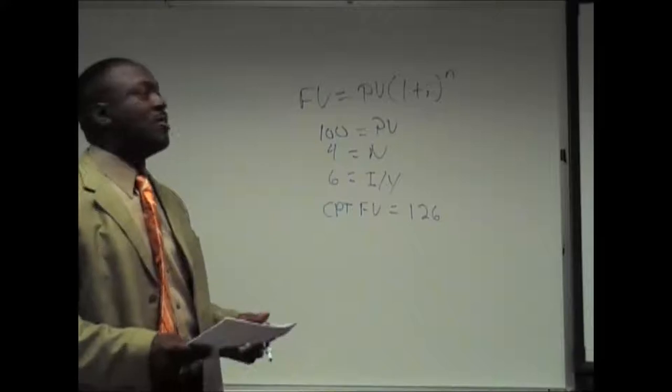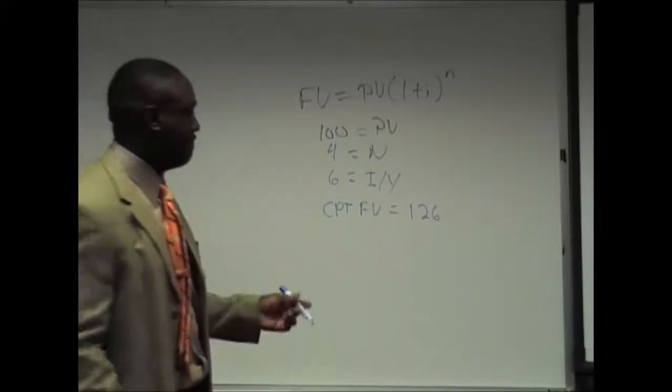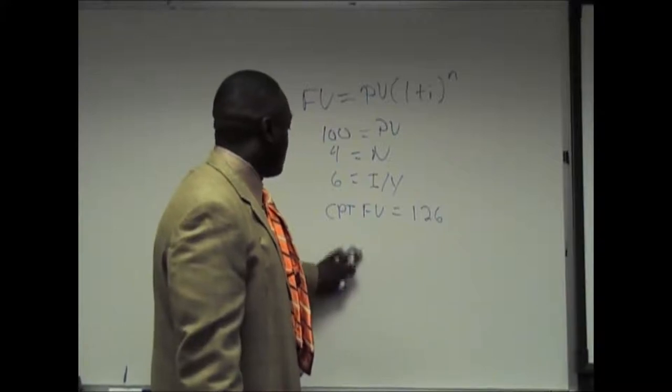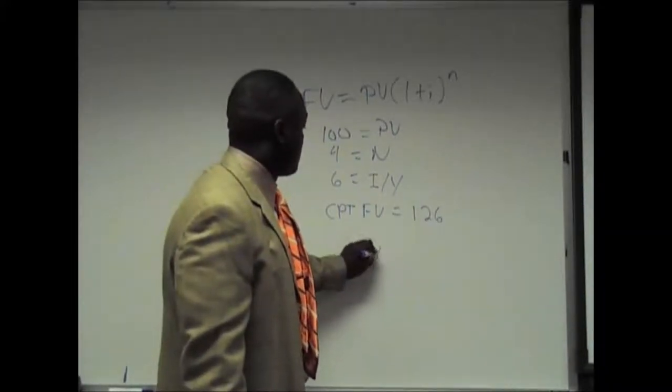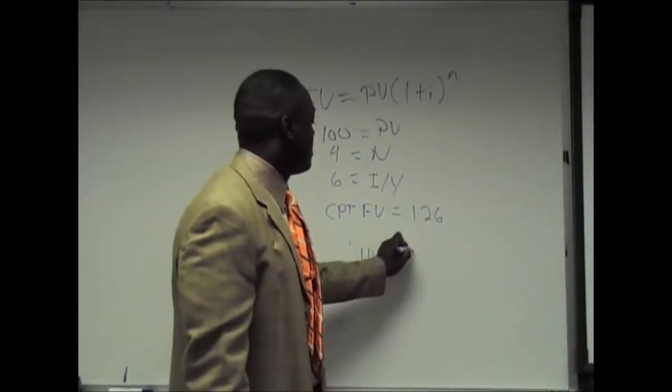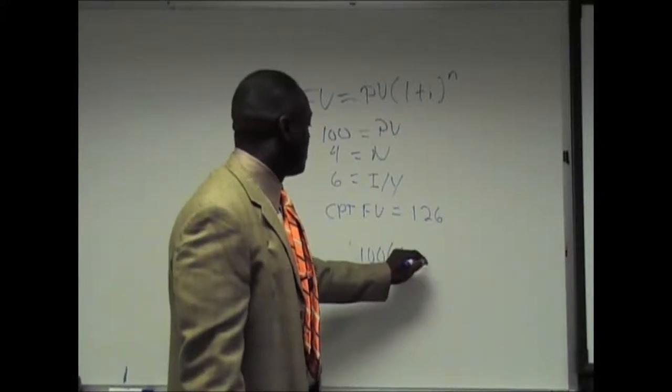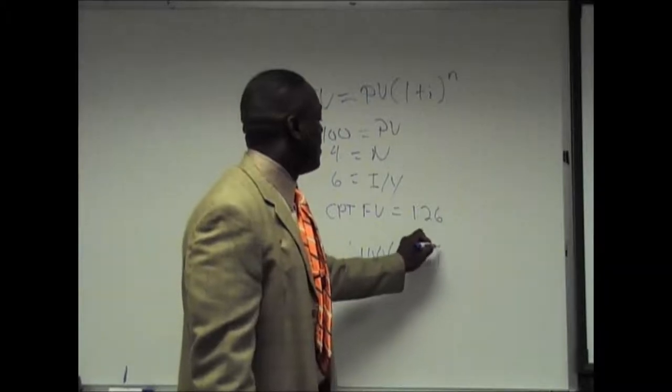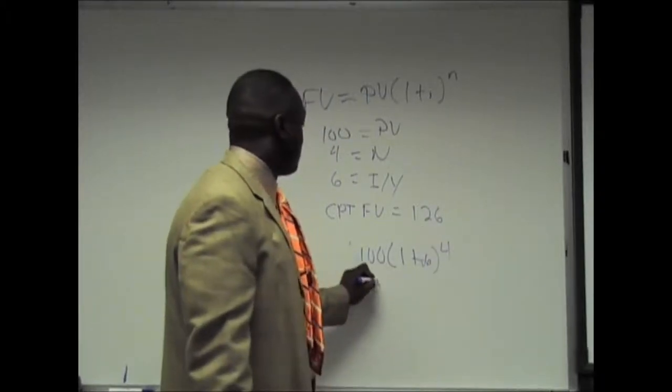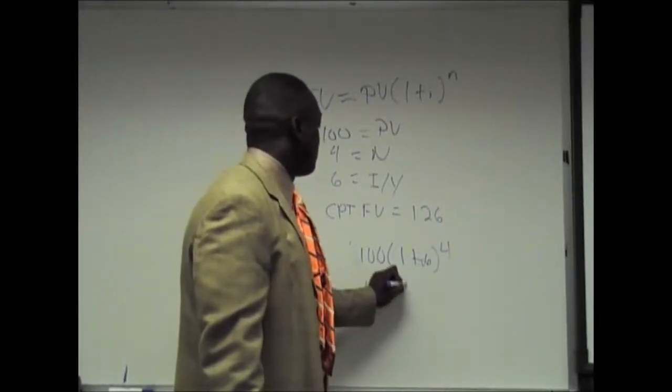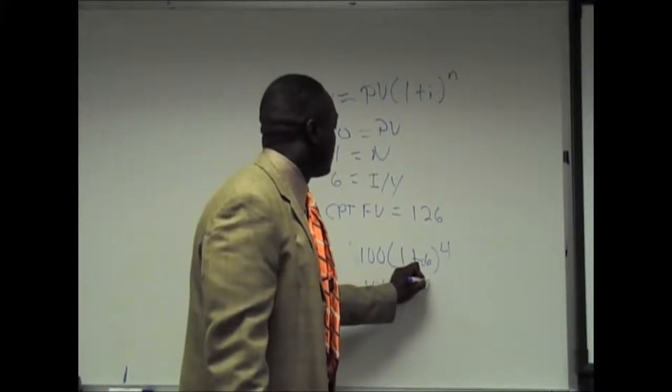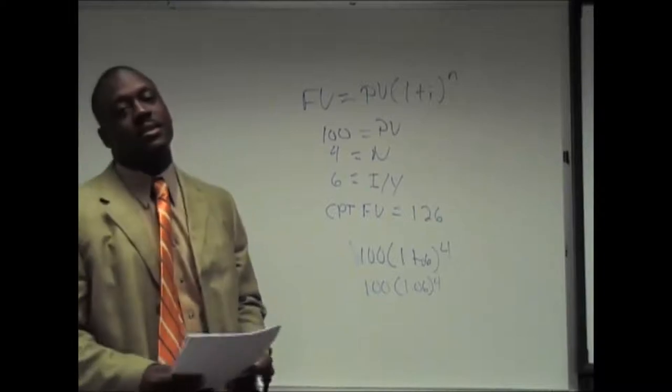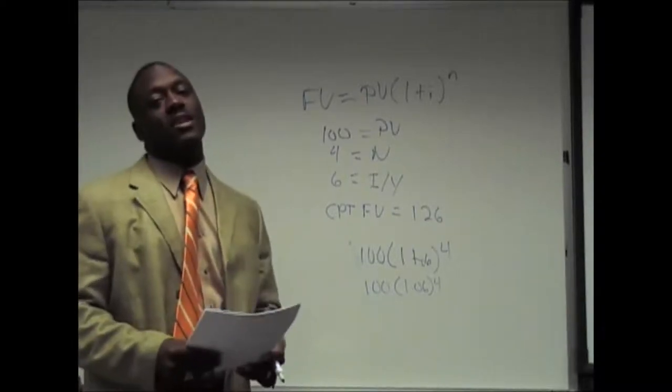Or you can plug it into the formula. PV 100 times 1 plus I to the N number of periods 4, which will result in 100 times 1.06 to the 4th power. So you get 126. That is the future value of a single amount.